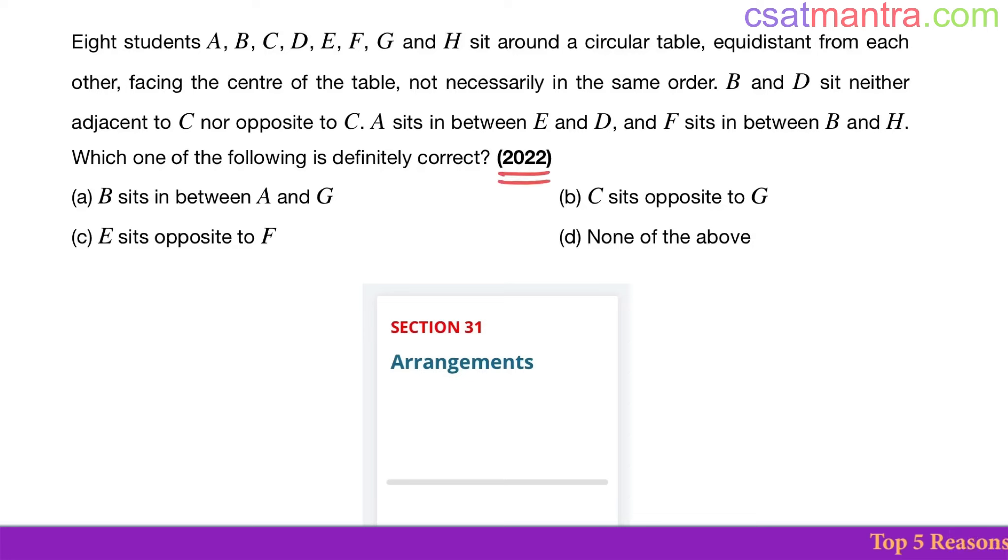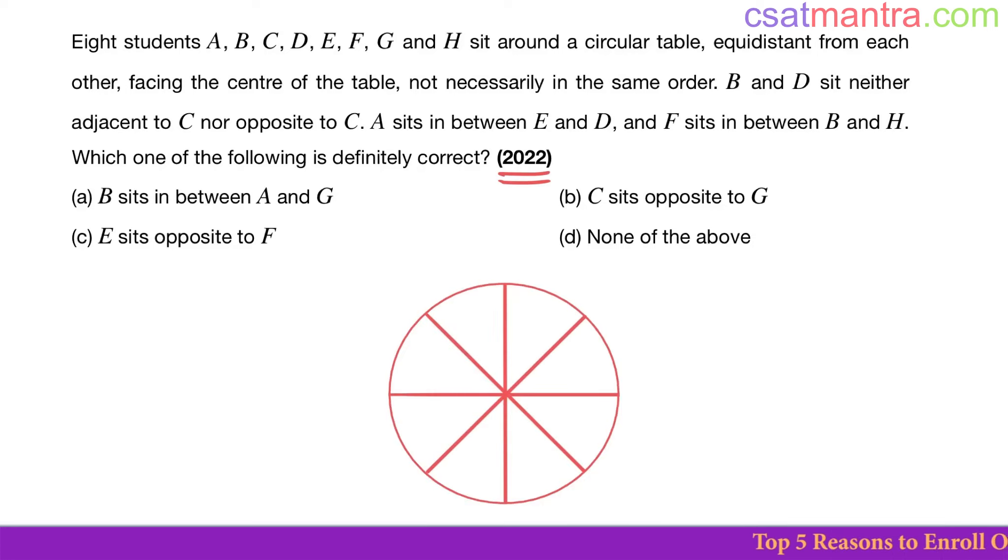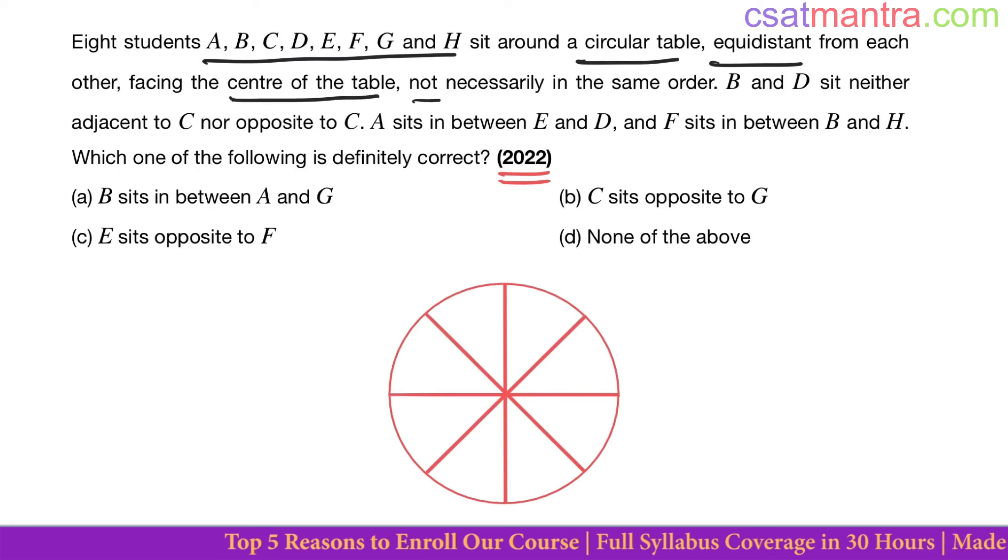2022 question based on arrangements: eight students A, B, C, D, E, F, G, H sit around a circular table, equidistant from each other, facing the center of the table, not necessarily in the same order. B and D sit neither adjacent to C nor opposite to C.